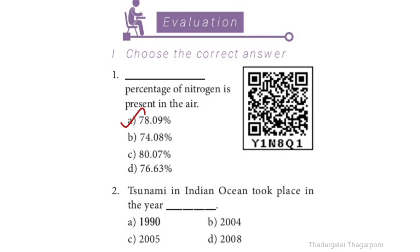Second question: The tsunami in the Indian Ocean took place in the year dash. The answer is option B: 2004. The tsunami in the Indian Ocean took place in the year 2004.